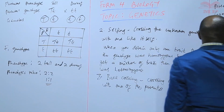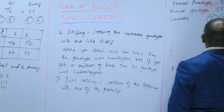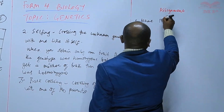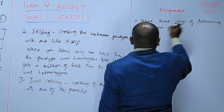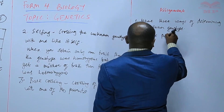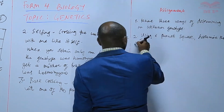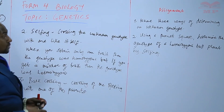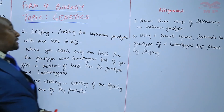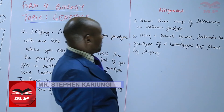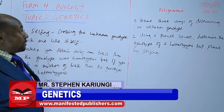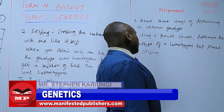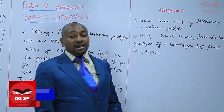We'll have an assignment. Question one: name three ways of determining an unknown genotype. Question two: using a Punnett square, determine the genotype of a heterozygous tall plant by selfing. We'll stop there until next time. Goodbye.